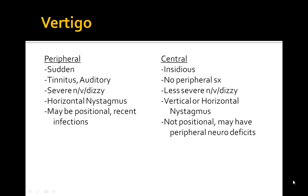Vertigo can be two types. Peripheral vertigo features sudden onset, tinnitus, dizziness, horizontal nystagmus, and is positional — you can remember it because the P in positional matches peripheral. Because it's peripheral and near the ear, there's a lot of tinnitus. Central vertigo has no positional changes, is less severe, but features vertical and horizontal nystagmus — mainly vertical — and is insidious in onset.